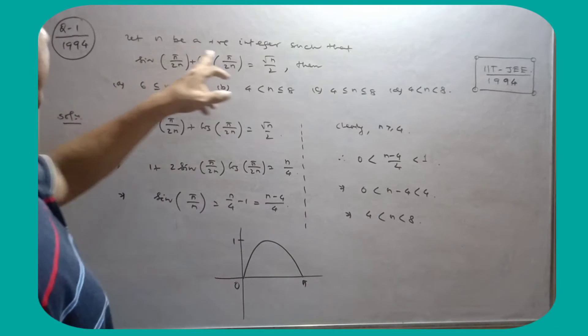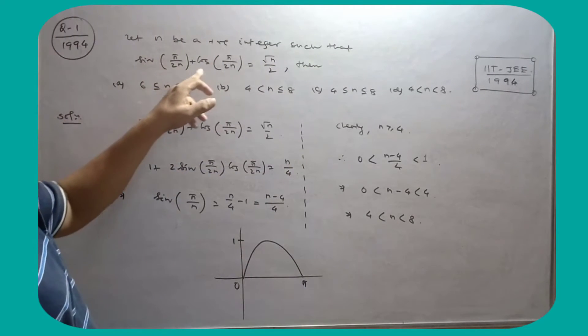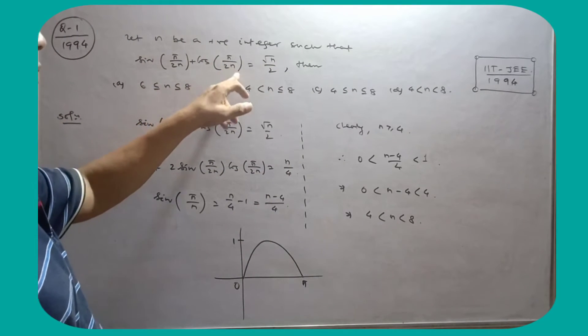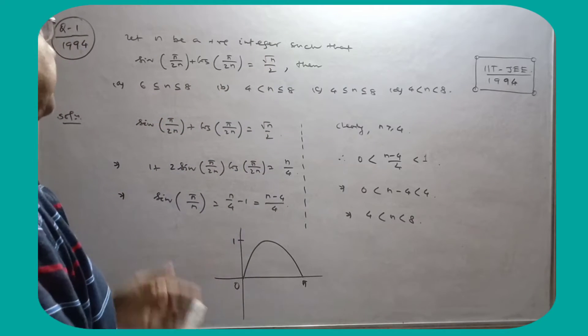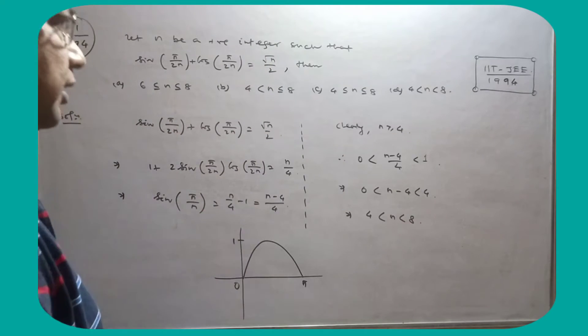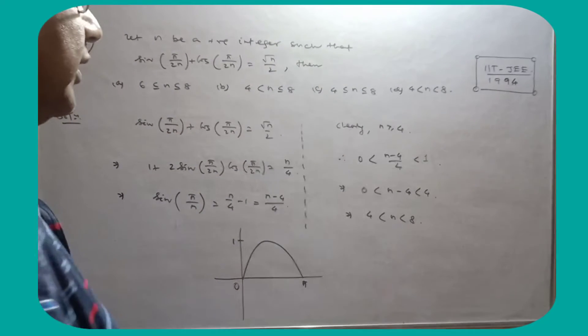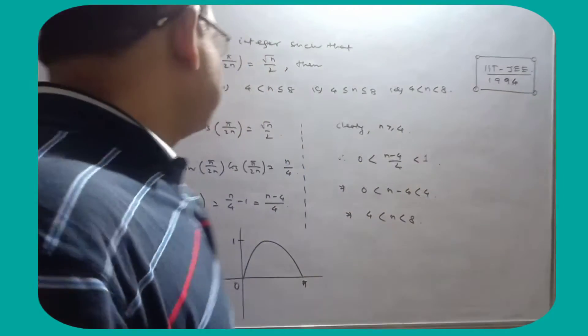Let N be a positive integer such that sin(π/2N) + cos(π/2N) = √N / 2. Then N का value क्या होगा — यह आपको find करना है। यह 1994 में पूछा गया था।